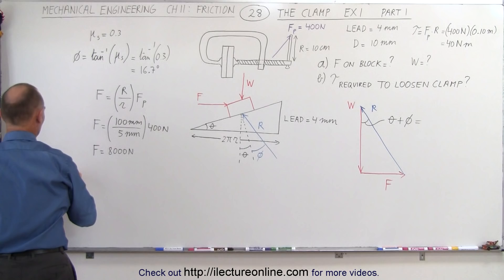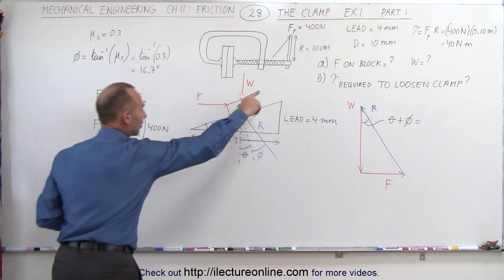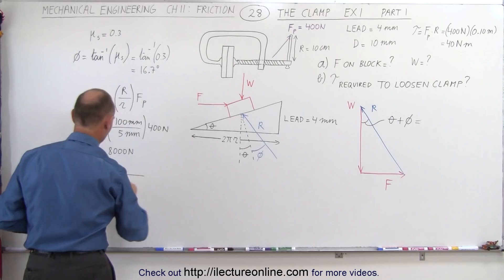So that would be theta is equal to the arc tangent of the opposite side, which is the lead, which is 4 millimeters, divided by the adjacent side, which is 2 pi times the radius, which is 5 millimeters.